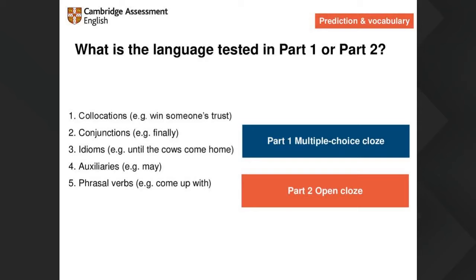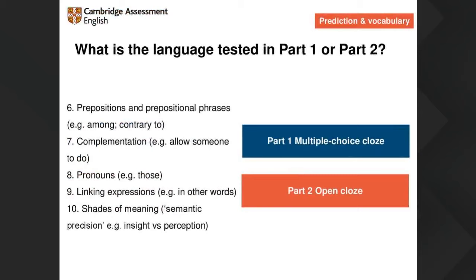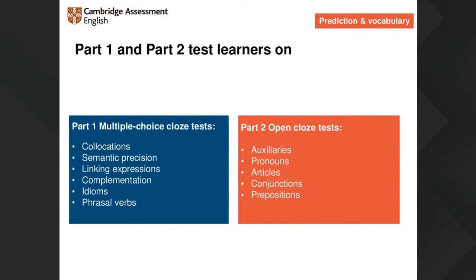Part one, the multiple choice cloze, is actually tested as reading because of its much more lexical focus. In the 2015-2016 revision, Reading and Use of English became one paper — prior to that they were separate. The open cloze is more hardcore grammar, which can be learned through studying grammar. The more lexical stuff, however — the only way to really build a developed understanding and knowledge of vocabulary is by reading. That's why part one is marked as reading.